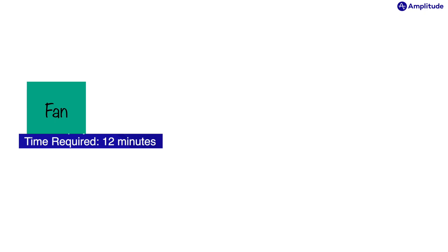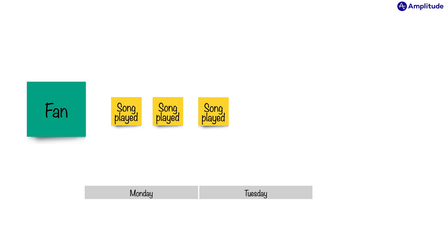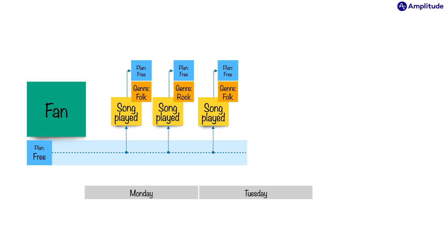Let's get straight to an example and visualize how Amplitude works. Here we have a music fan, and our fan listens to two songs on Monday and one song on Tuesday. What type of music are they into? On Monday they listen to folk and rock, and on Tuesday they go back to folk. So far they've been on the free plan. We indicate this with a blue sticky note and a shaded box. This means that we record the fact that they were on the free plan with each of the three song plays.